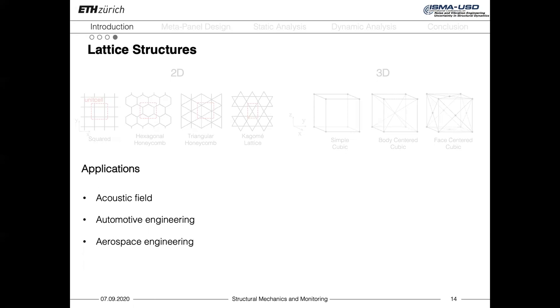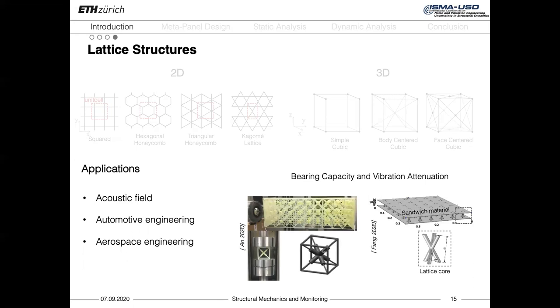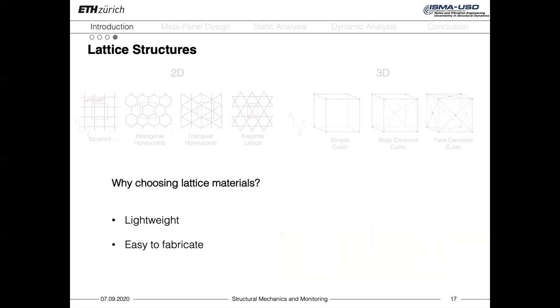These lattices find already application in different fields, like in acoustic, automotive, or aerospace engineering. Here they are exploited for their structural bearing capacity, for the attenuation of mechanical vibrations, or as cores in sandwich materials. However, when a trade-off between bearing capacity and vibration absorption is required, they are only able to address frequencies in the range of kHz and MHz, thus much higher than the frequency range of interest in this project.